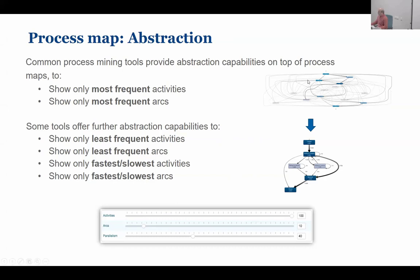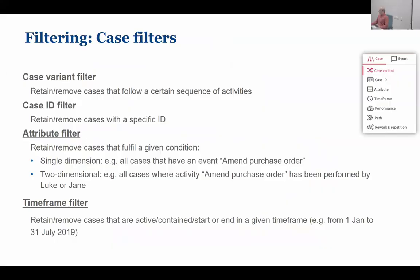Process maps are very difficult to visualize entirely. Some processes are simple so you can see them 100%, but most are quite complex so you have to play around with the sliders. Another thing we saw last week was filters.